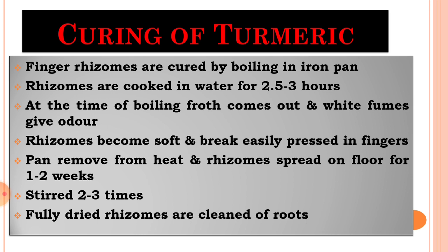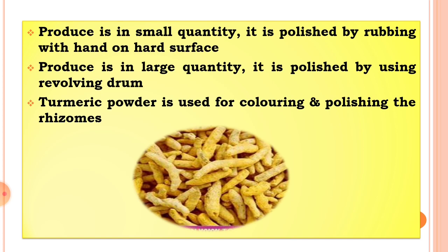They are turned three to four times for uniform drying. Fully dried rhizomes are again cleaned off roots if any and polished. After drying, the rhizomes are cleaned and polished by rubbing, which removes the outer hard surface. If produced in large quantities, the rhizomes are polished using a revolving drum.